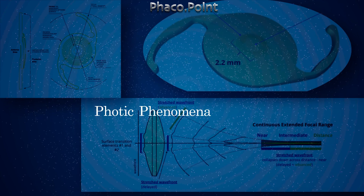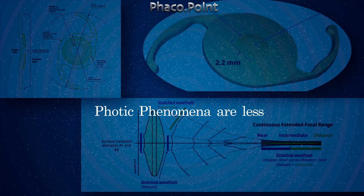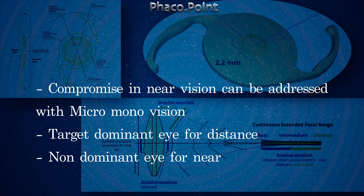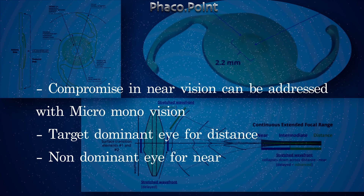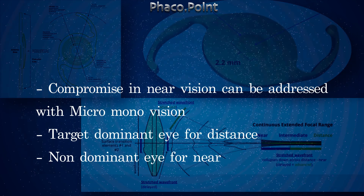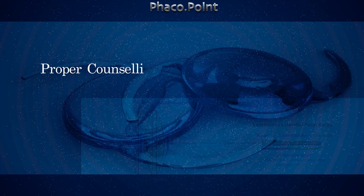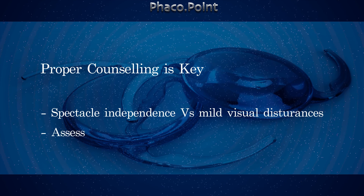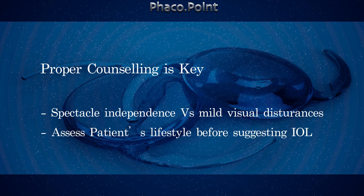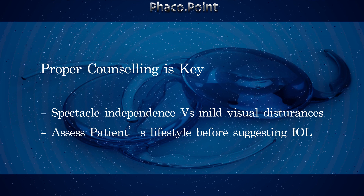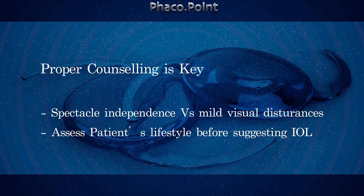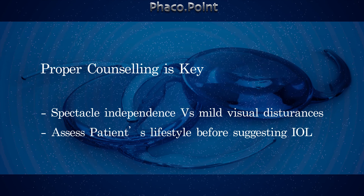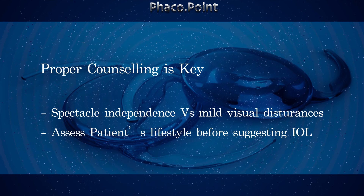Since there is no splitting of light, photic phenomena are minimal or non-existent. The use of a micro-monovision of 0.75 diopters — with the dominant eye focused for distance and the non-dominant eye focused at near — will do the trick in most cases. The importance of proper counseling cannot be overemphasized. Let the patient know what they are compromising to gain spectacle independence, and assess whether they are ready to accept this trade-off. Assess the lifestyle of the patient and at what distance much of their work and life revolves around.